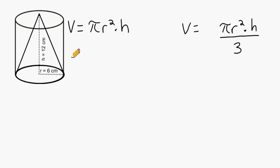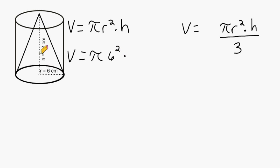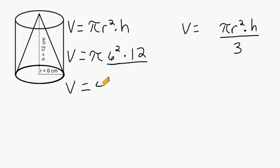Now let's find the volume of the cylinder, and we are going to solve in terms of pi to start off with. What we do is substitute the radius with the number 6, and we have to raise that to the second power, and then we multiply by the height of the cylinder, which is equal to 12 centimeters. Next we take 6 to the second power, which is 36, and then multiply 36 by 12, which is equal to 432. So the volume of the shown cylinder would be equal to 432 pi cubic centimeters.